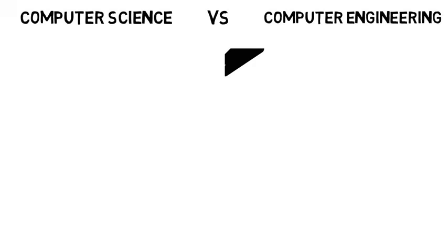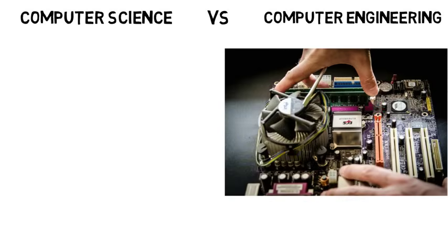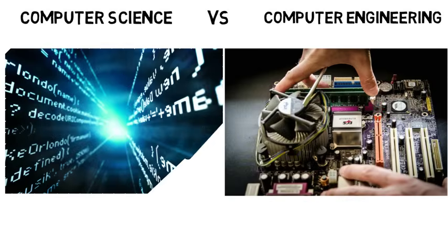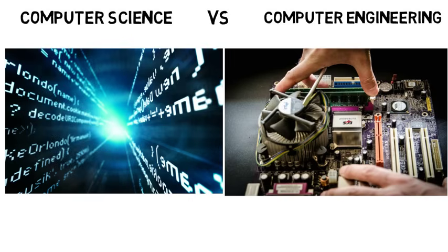Computer Science and Computer Engineering are two very similar majors, but have some big differences. For this video, I will assume you've watched my videos on Computer Science and Computer Engineering, because those have more detail and they are linked in the description.